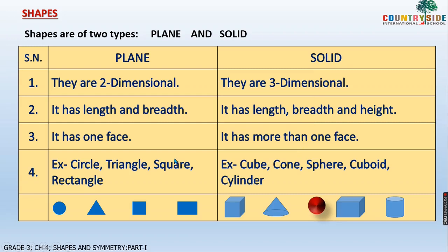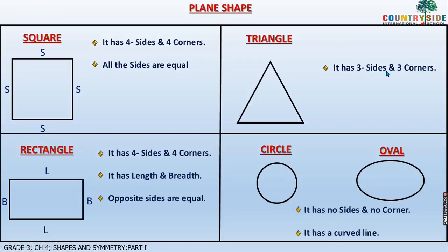This is the difference between plane and solid shapes. Now first we will start with plane shapes. In plane shapes, first is square. What is the property of square? It has four sides and four corners. You can see four sides, and the corners: one, two, three, and four. All the sides are equal.